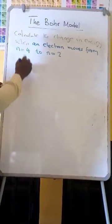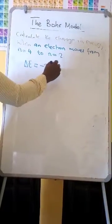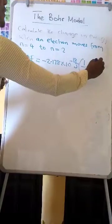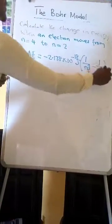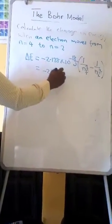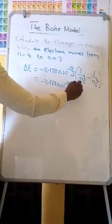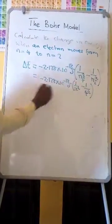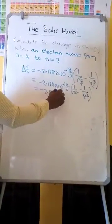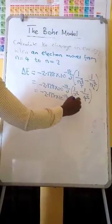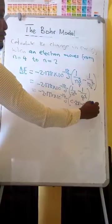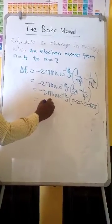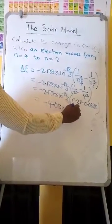Delta E is equal to negative 2.178 times 10 to the minus 18 joules times Z squared, times the quantity 1 over n-final squared minus 1 over n-initial squared. That gives us negative 2.178 times 10 to the minus 18 times 1 over 2 squared minus 1 over 4 squared, which is 0.25 minus 0.0625. Computing this, delta E equals negative 4.08 times 10 to the minus 19 joules.